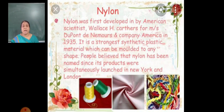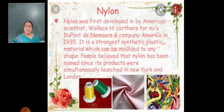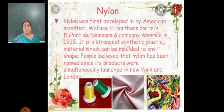Next, let's look at nylon. Nylon was first developed by an American scientist. It is the strongest synthetic plastic material, which can be molded into any shape. It is believed that nylon has been named since its product was simultaneously launched in New York and London. Nylon is also obtained from chemical compounds: nylon 6-6 and nylon 6. It is also used in parachutes.